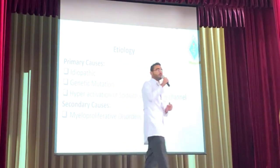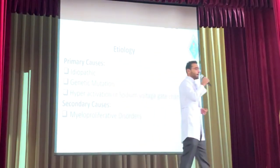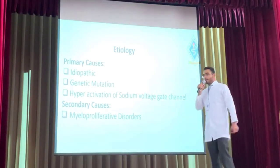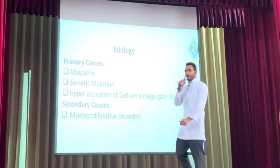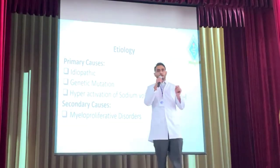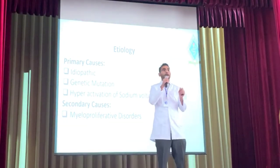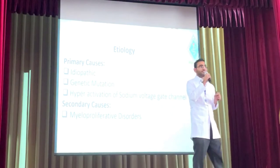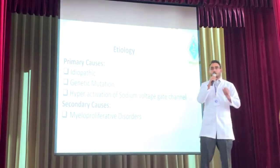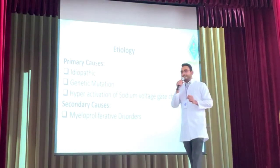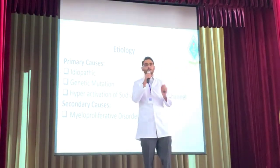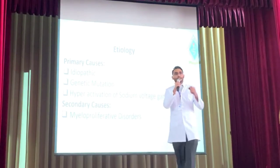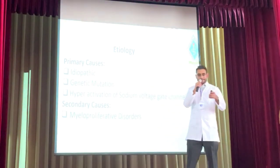The secondary cause of erythromelalgia is myeloproliferative disorder. In myeloproliferative disorder, bone marrow produces an abnormal amount of cells. In this condition, we can see erythrocytosis, thrombocytosis, and also increased lymphocytes.